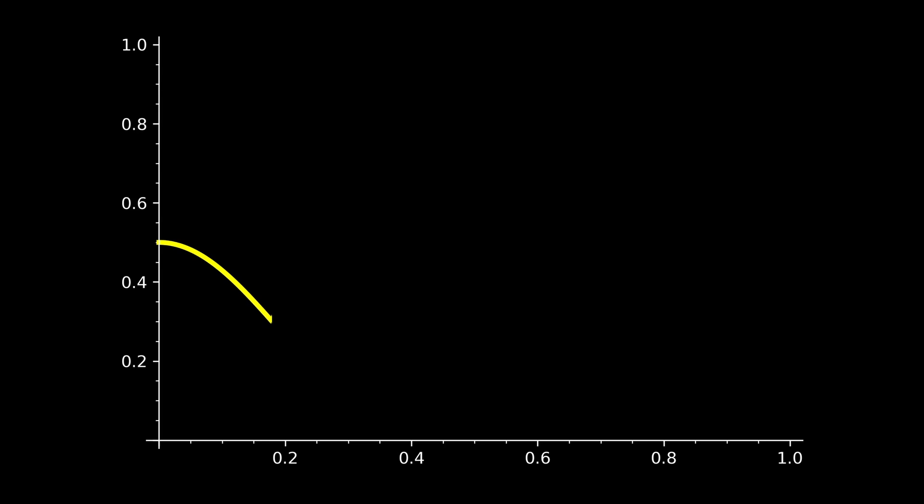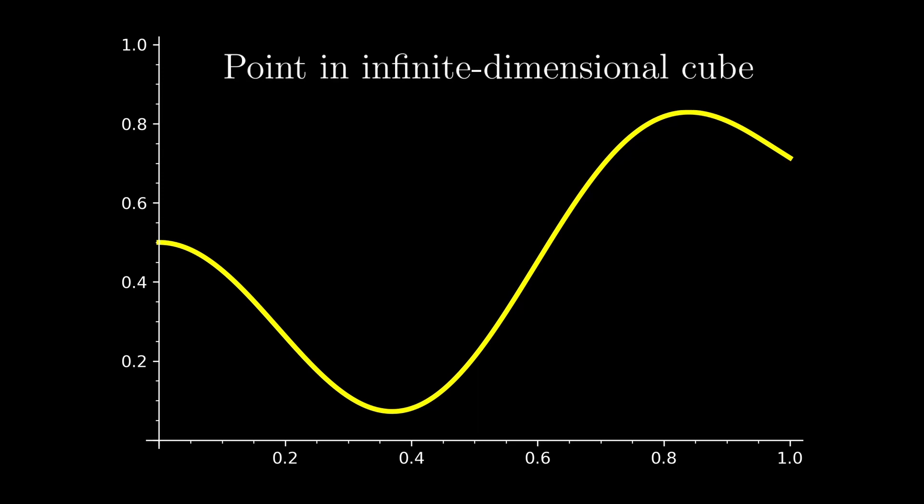Instead of taking a sequence of real numbers, I'm going to pick a number for each number in between 0 and 1. Here is a point in an infinite-dimensional cube, or, perhaps more familiarly, it's a function with input and output in the interval 0, 1.